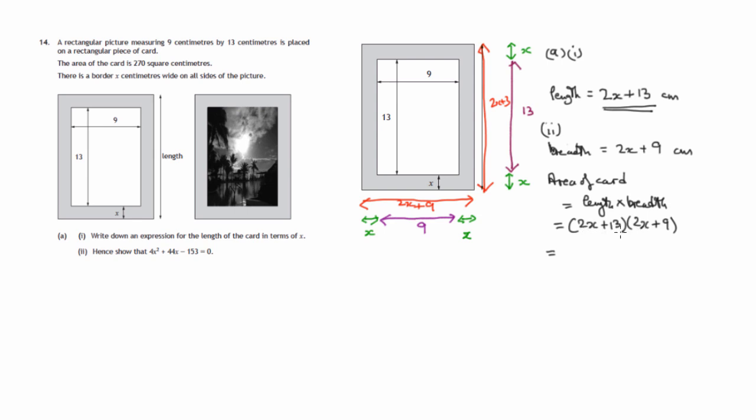The first terms, 2x times 2x gives us 4x². Outside terms, 2x times 9, is 18x. The inside terms, 13 times 2x, is 26x. And the last, 9 times 13, is 117. That gives us 4x² + 44x + 117.